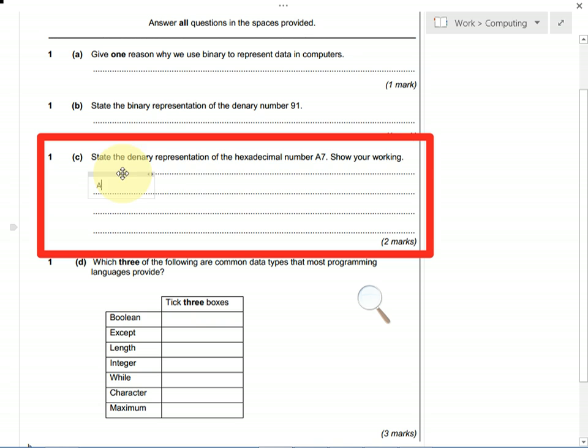So we start by writing each nibble, each separate digit in our number, so A and 7, and we convert them into the decimal number. A is worth 10, and 7 is less than 10, so it's just 7.